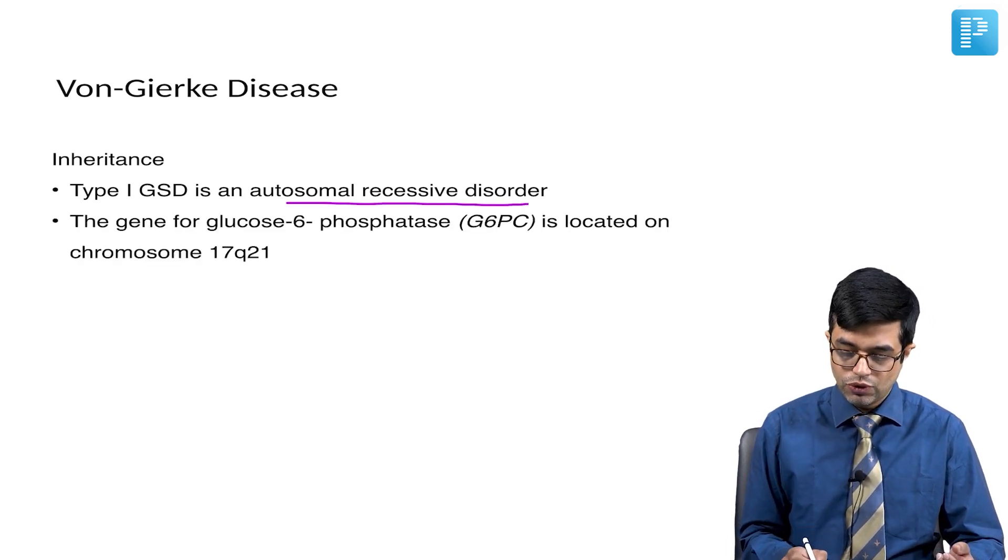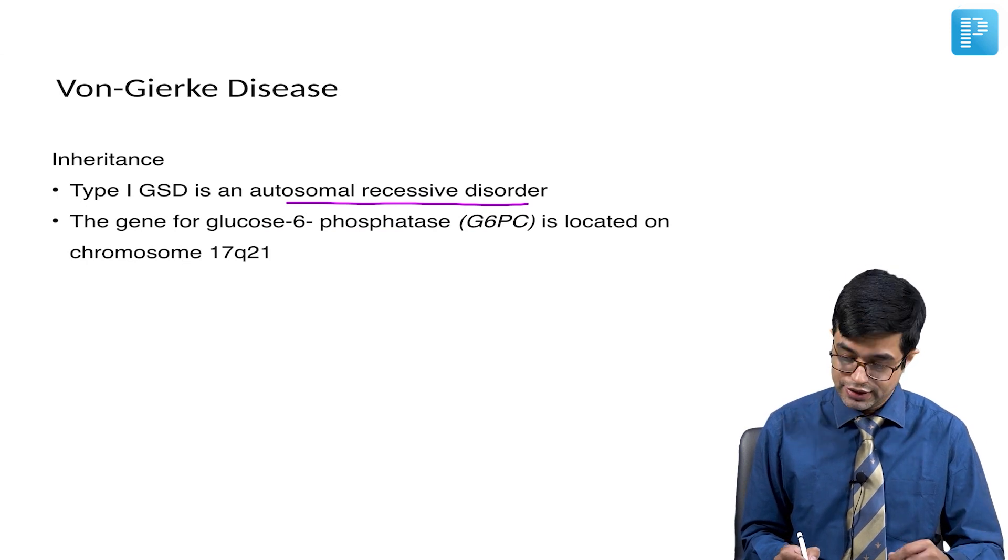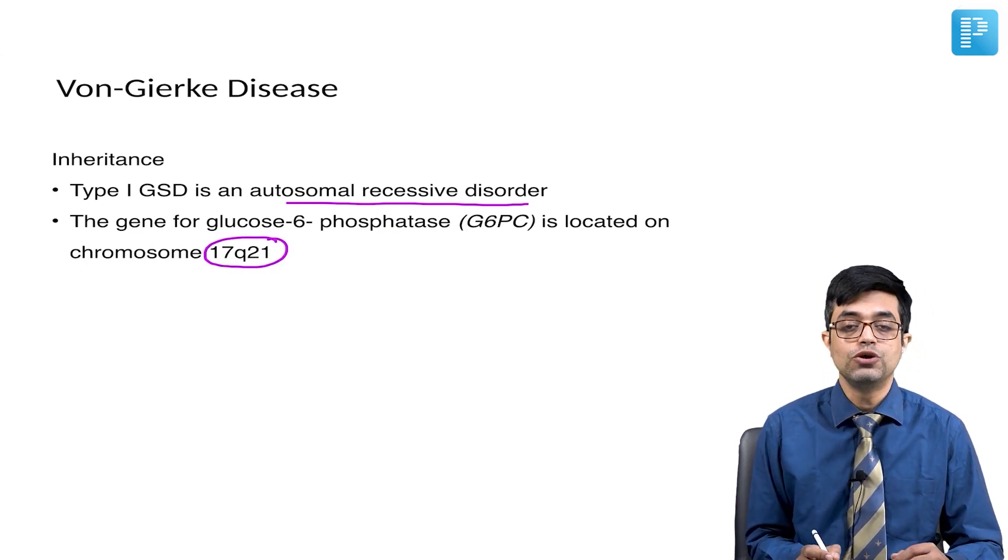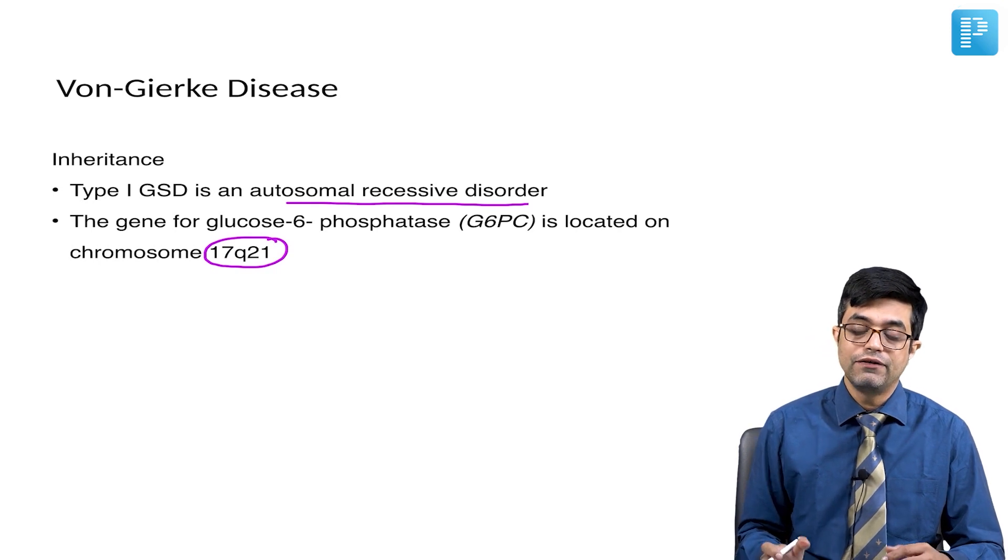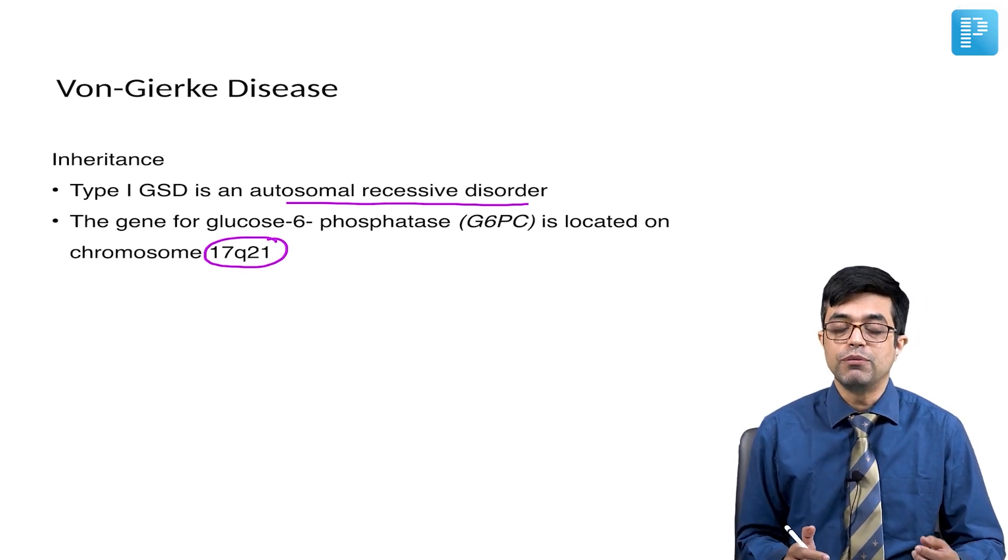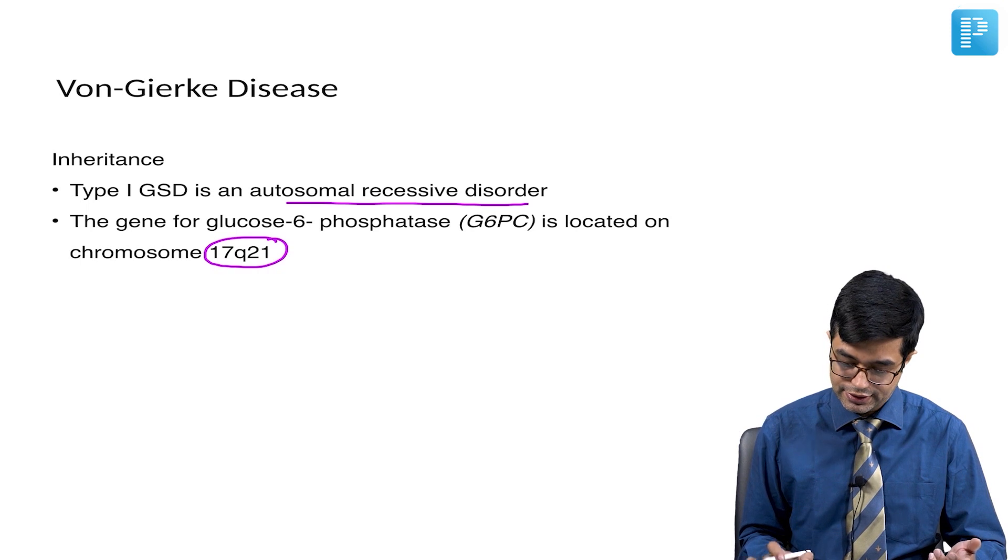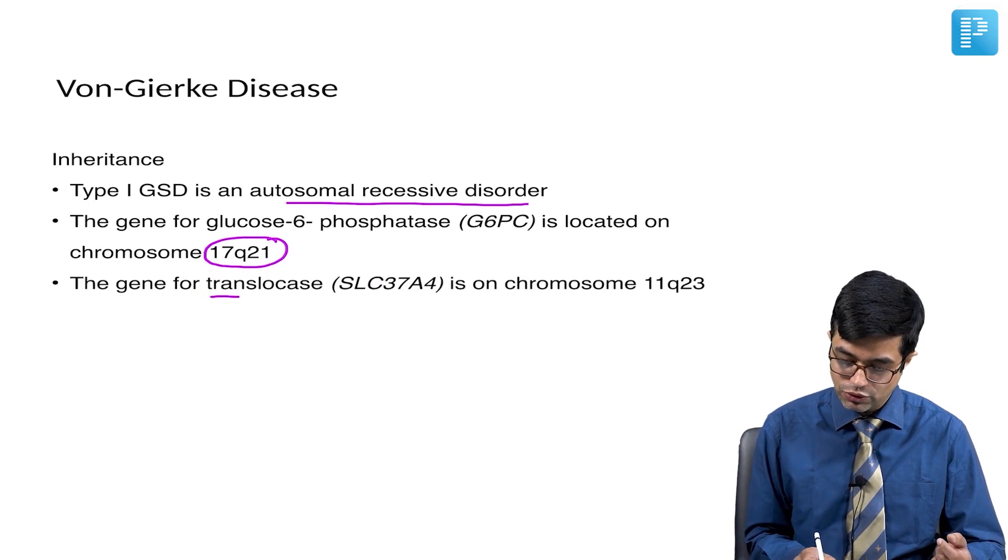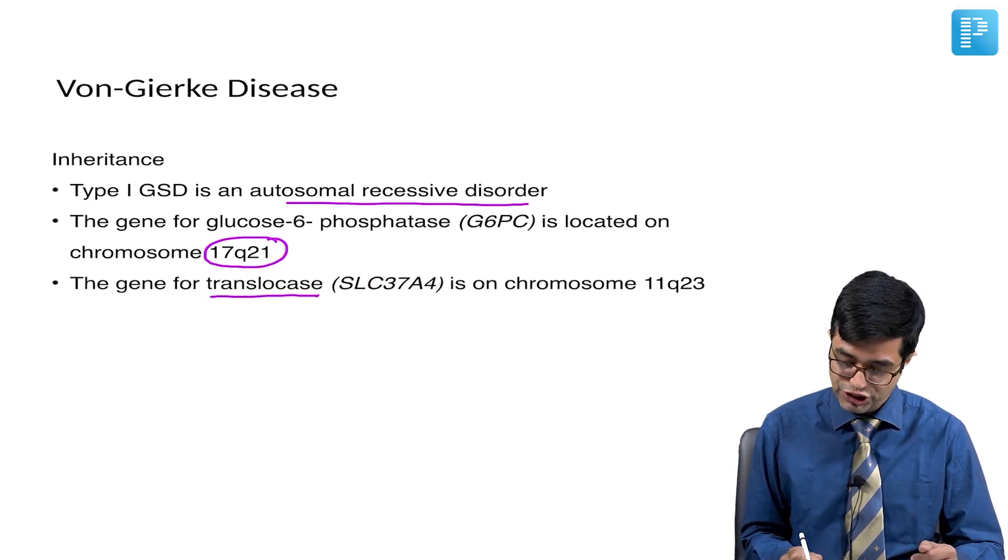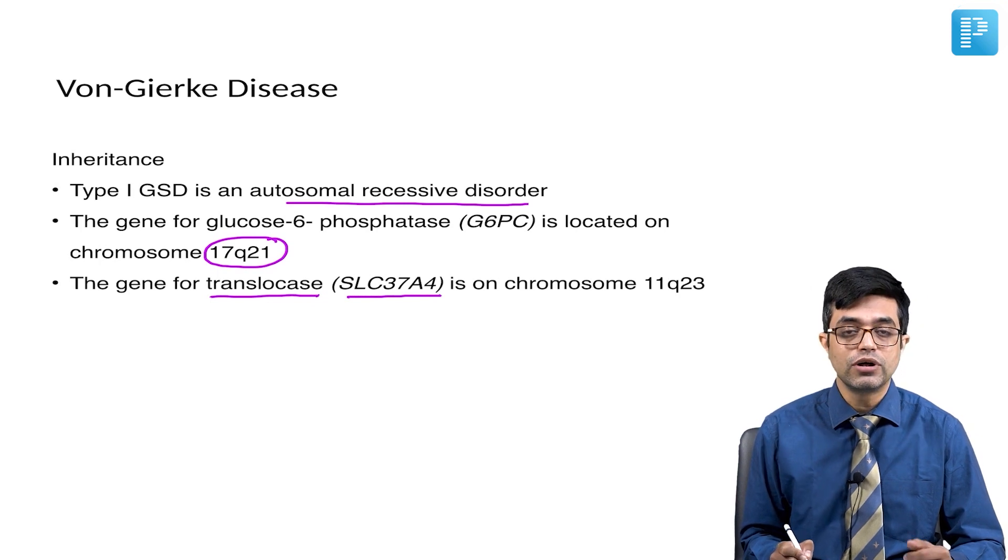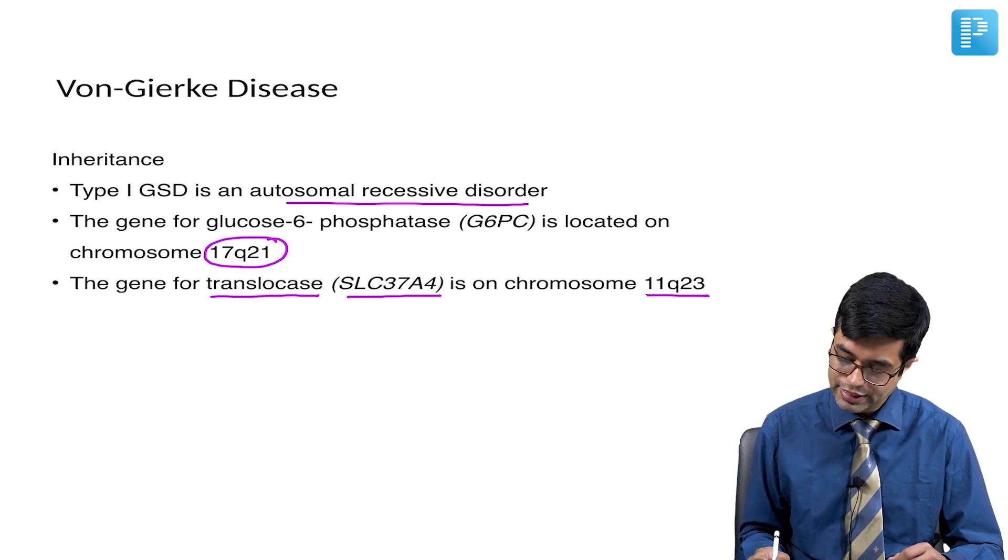The gene for glucose 6-phosphatase, which is the deficient enzyme, is normally located on chromosome 17Q21. Any deficiency of this enzyme will produce Von-Gierke disease. Also remember that the translocase GSD1B gene is SLC37A4, located on chromosome 11Q23.